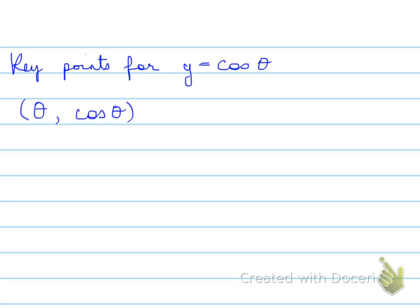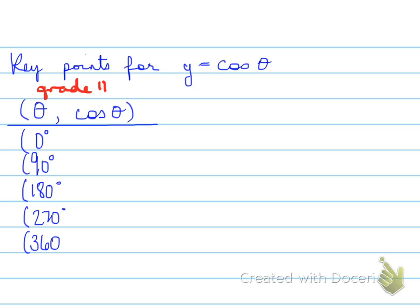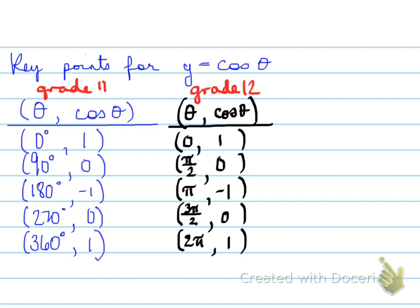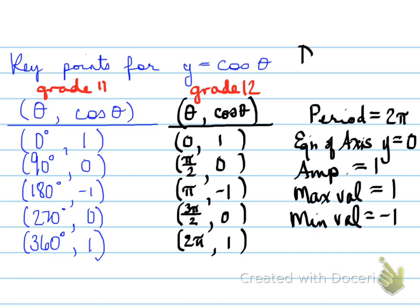Key points for cosine theta. So again, we have it for grade 11. Here are the coordinates. Grade 12, convert the coordinates to radians. Same π radians that we had for sine. And the cosine y values are corresponding to the cosine graph. Period is 2π. Equation axis is y = 0. Amplitude is 1. Max is 1. Min is -1. And then your domain and range are as follows, which is the exact same for the sine graph.